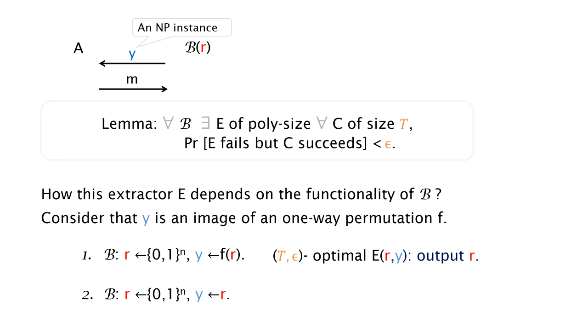As the second example, the algorithm B simply samples an R from the range of F and then outputs R. And for this algorithm B, an arbitrary algorithm can also be optimal. This is because F is one-way and no algorithm can compute a pre-image of a random Y.